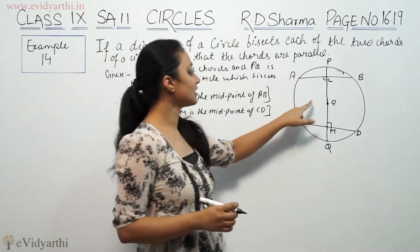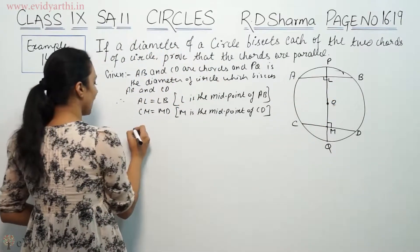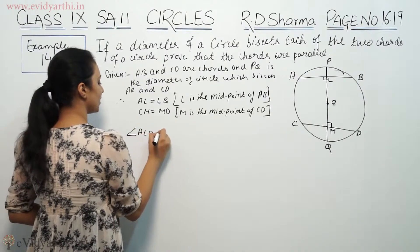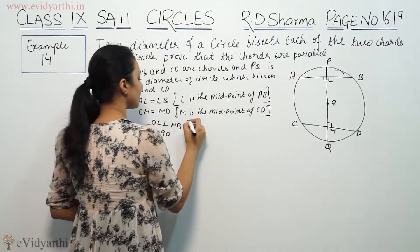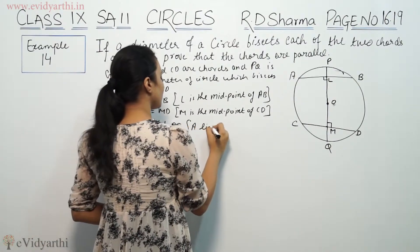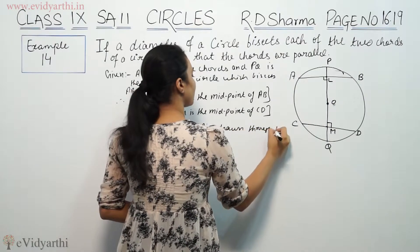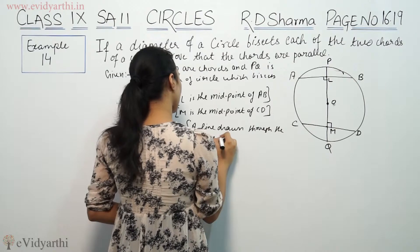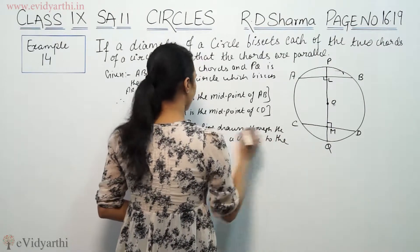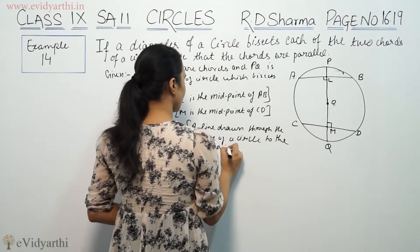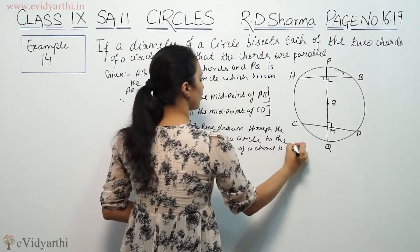Now at the center of the circle, the line from center to midpoint of a chord will be 90 degrees. So here we will write angle ALO is equal to 90 degrees. We will write OL perpendicular to AB. Reason: A line drawn from the center of a circle to the midpoint of a chord is perpendicular to the chord.